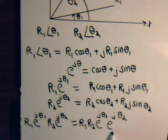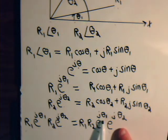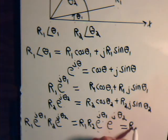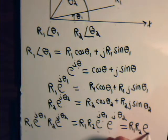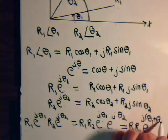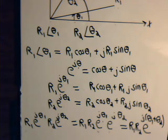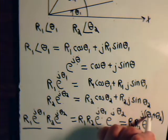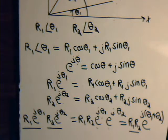That will equal R1 times R2, and we have e to the j theta1 times e to the j theta2. Multiplying is the same thing as adding exponents, so we can write this as R1 R2 e to the j times theta1 plus theta2. And there we have it. To multiply two different polar vectors together, all we have to do is multiply their magnitudes together and add their angles. It's a very simple operation.